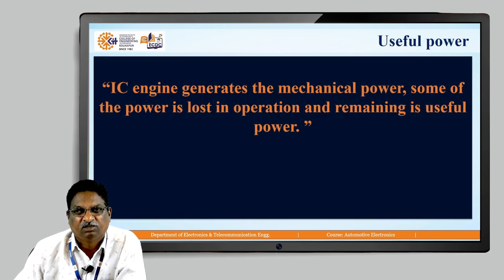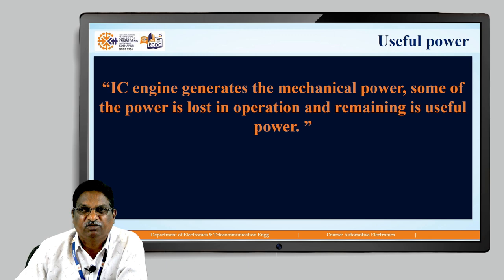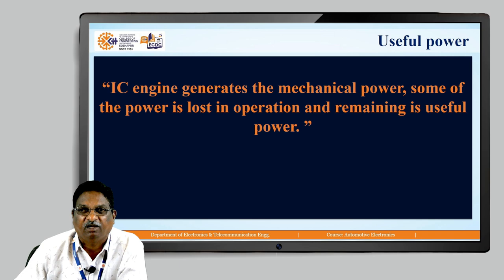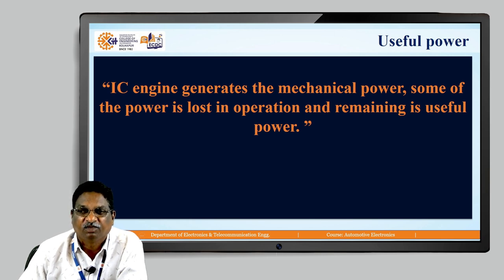What is useful power? An IC engine generates mechanical power, but some of the power is lost in operation and the remaining is useful power. The engine consists of various rotating parts and there is friction in some of those parts, and therefore the efficiency of the engine decreases due to these rotating parts and friction.